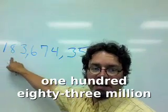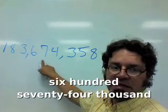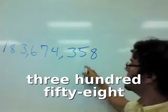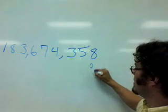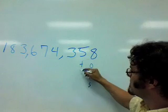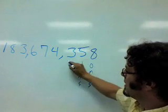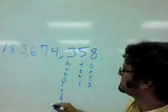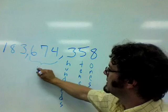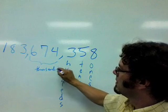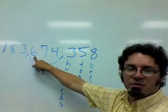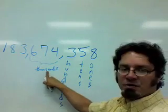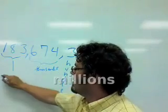One hundred eighty-three million six hundred seventy-four thousand three hundred fifty-eight. This column here is the ones column. Ones, tens, right here is the hundreds column. Over here, all of this is the thousands — one thousand, ten thousand, hundred thousand. You read the three numbers together and then say thousand. And then over here, you've got the millions.